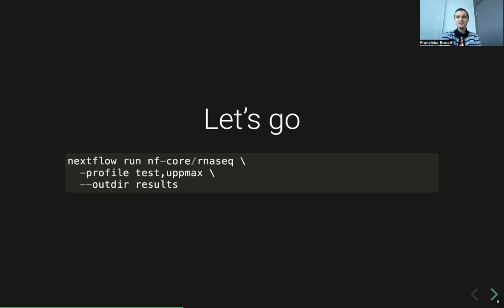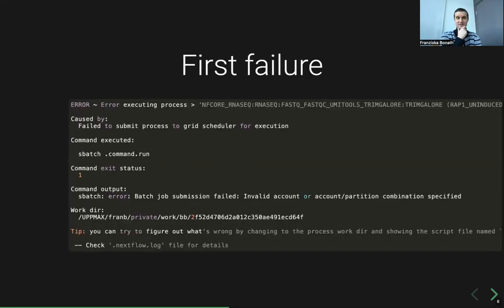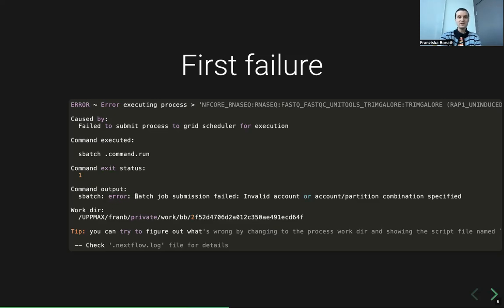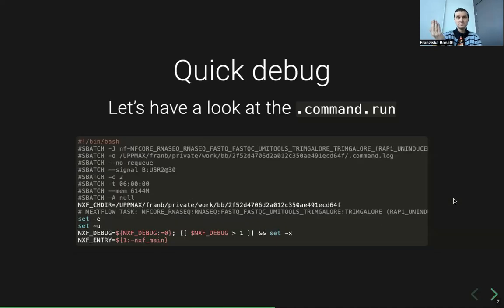Unfortunately this is failing. When I see a failure like this, I look at the warnings and errors. I can see it failed to submit a process to the grid scheduler for execution. The command executed was `.command.run`, that's the command Nextflow generates to run a single process. The actual error was: 'Batch job submission failed: invalid account or account/partition combination specified.' So let's debug.